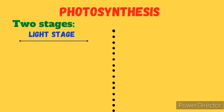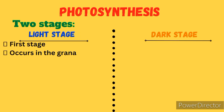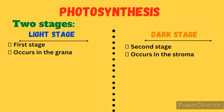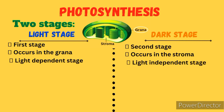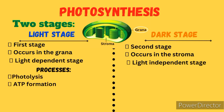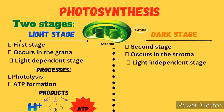Now let us summarize what happens during the two stages. The light stage is the first stage and occurs in the grana of the chloroplast; it is the light-dependent stage because light energy is required. Two main processes occur: photolysis and formation of ATP. There are three products from the light stage: hydrogen atoms, oxygen gas, and ATP. Hydrogen atoms and ATP proceed to the dark stage, while oxygen gas is released as a byproduct into the atmosphere.